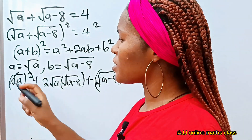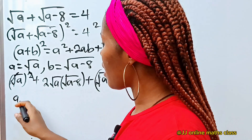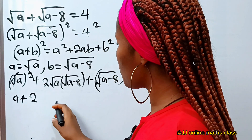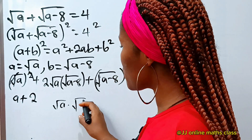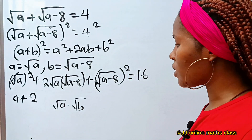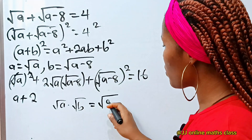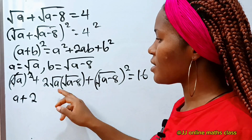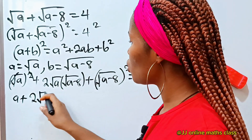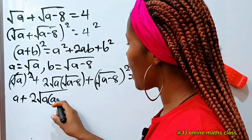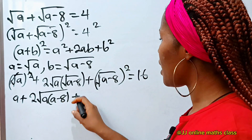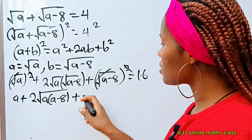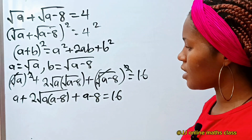Now remember that squaring removes your square root sign. So here we have a. Then for the middle term, remember that root a multiplied by root b, according to the law of surds, is equal to square root of a multiplied by b. So we can rewrite that as 2 times square root of a multiplied by a minus 8. Then plus, since squaring removes the square root, we have a minus 8, and this is all equal to 16.